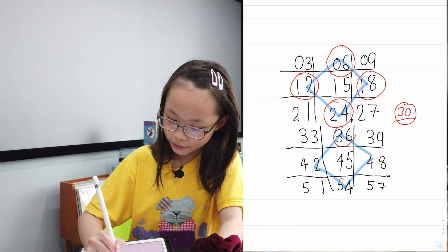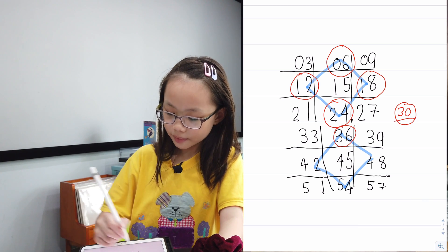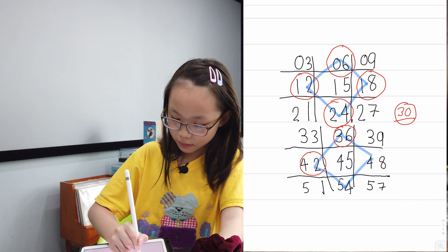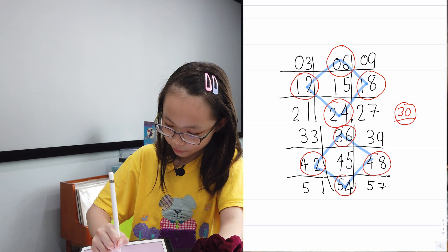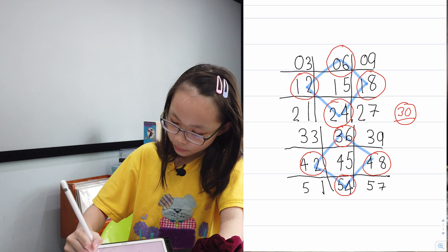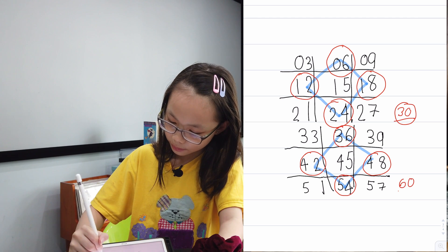6 x 6 is 36, 7 x 6 is 42, 8 x 6 is 48, 9 x 6 is 54, and 10 x 6 is 60.